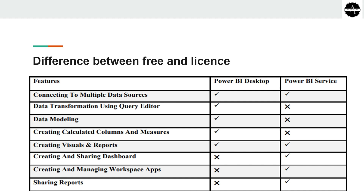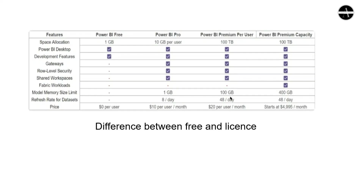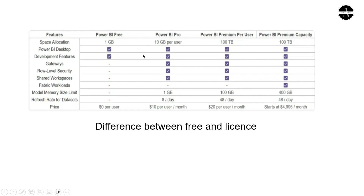In Power BI Service, there are different products depending on features. We have Power BI Free, which is the Desktop version; Power BI Pro, which is paid; and Power BI Premium, also paid. Premium comes in two types: Premium Per User and Premium Capacity. Premium Capacity is for large organizations, while Premium Per User is for a single user — for example, a Power BI consultant who wants premium features but is a single user.